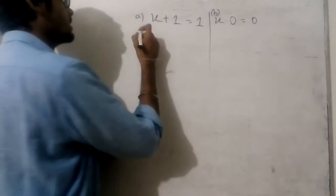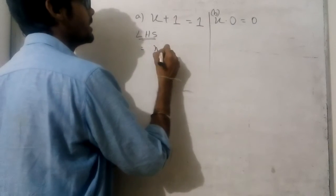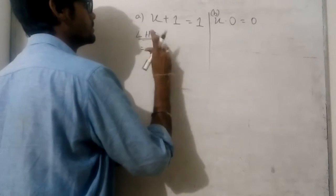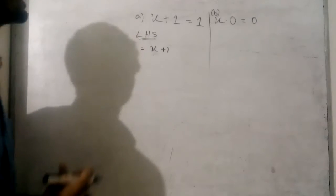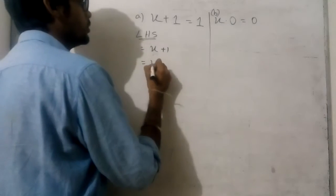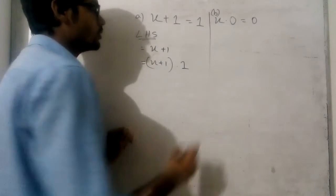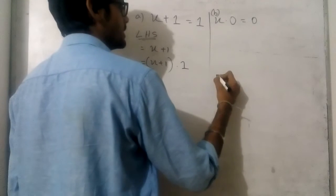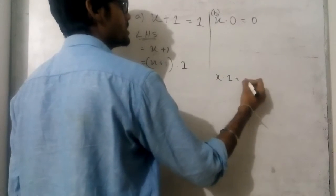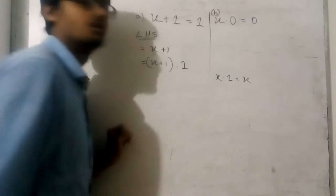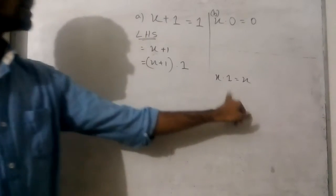Now we are going to solve this. LHS equals x plus 1, which equals x plus 1 into 1. Because we know that any variable into 1 equals the variable. We know this by our postulate.